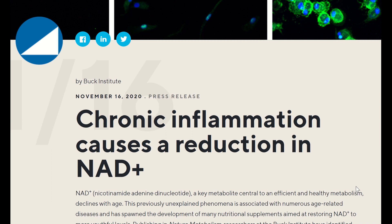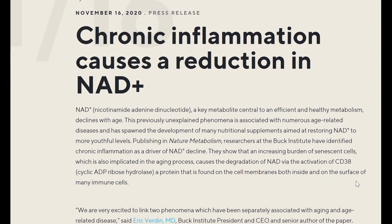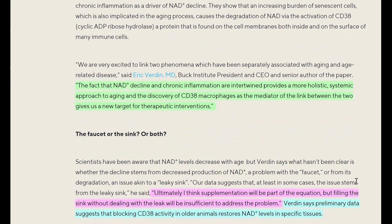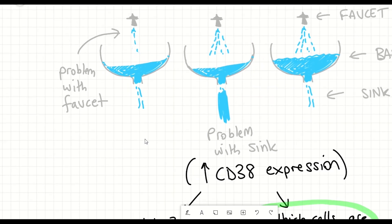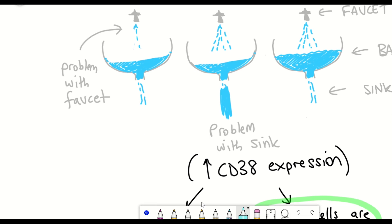What he says in this news article about this publication is that what the data shows is that the decline seen in the production of NAD plus during aging seems to be more of an issue due to a leaky sink as opposed to an issue in production of NAD plus.